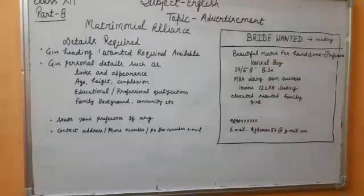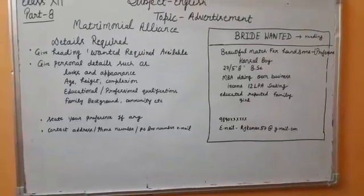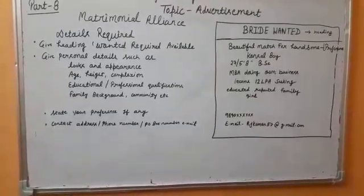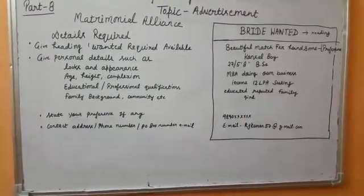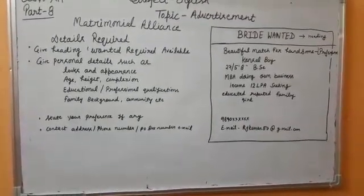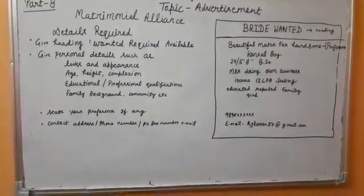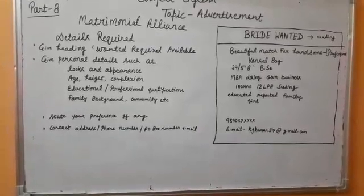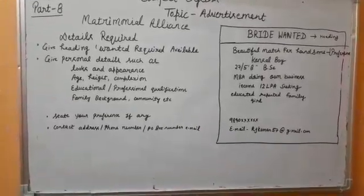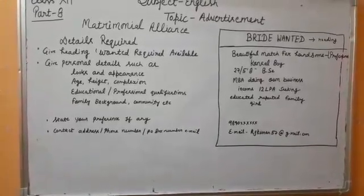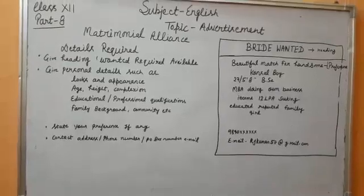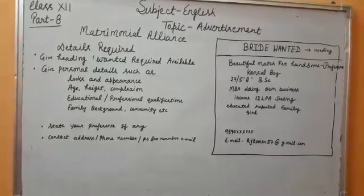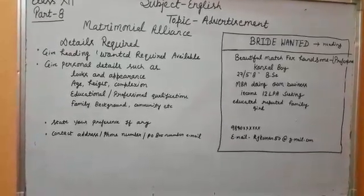Here I have given the example of a matrimonial alliance advertisement: 'Bride Wanted — Beautiful match for handsome council boy, 27 years age, 5'8" height, BSc, MBA doing, own business, income 12 LPA.'